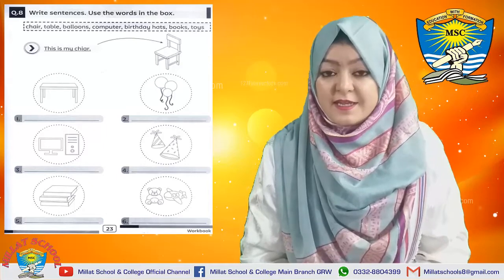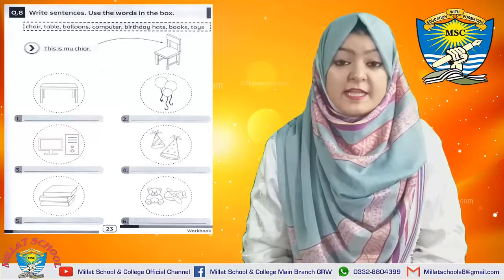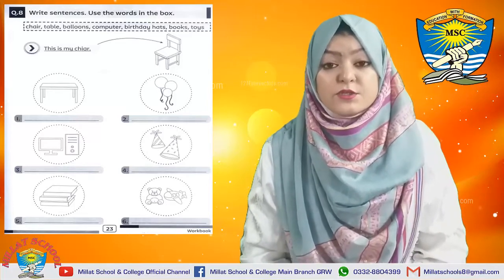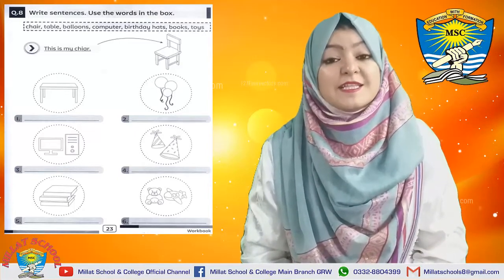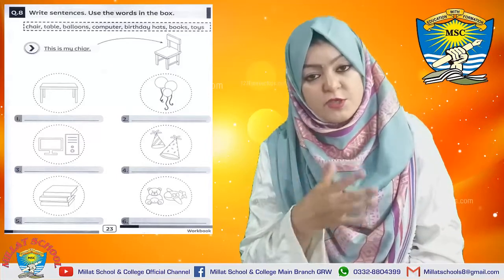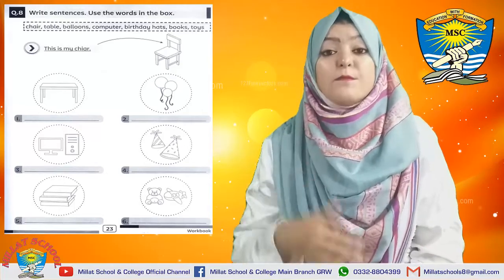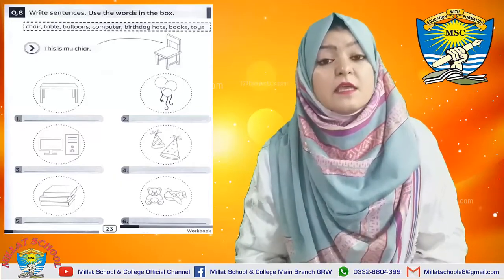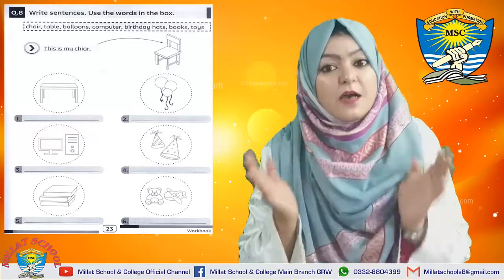Sentence number 3 — what is in the picture? It is a computer set, a computer system. So what will be the sentence — 'This is' or 'These are'? 'This is' — 'This is a computer.' Easy! Now in the next picture there are birthday hats, so what sentence will you make? 'These are birthday hats,' 'These are my birthday hats,' 'These are beautiful birthday hats,' 'These are colorful birthday hats.'